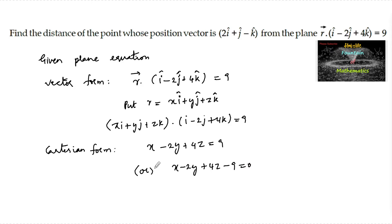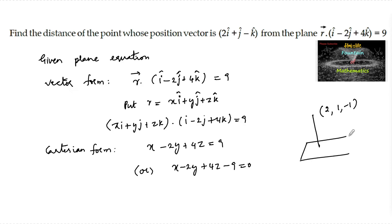We need to find the distance of the point whose position vector is 2i plus j minus k, so there is a point 2, 1, minus 1. We need to find the distance from the point 2, 1, minus 1 to the plane x minus 2y plus 4z minus 9 equals 0.